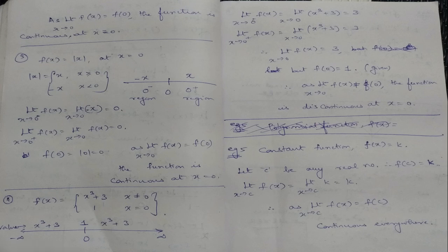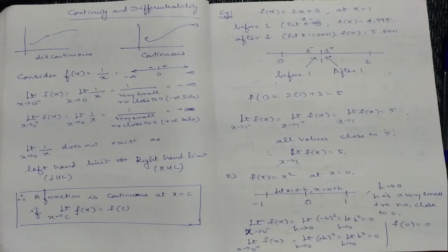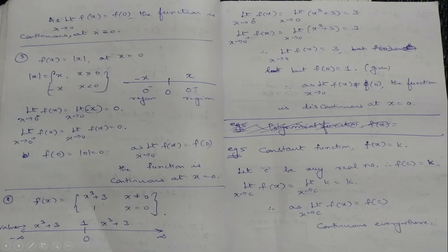If the function is continuous at x = c, the limit equals f(c). We have to find f(c), left-hand limit, and right-hand limit. Sometimes it is not required to find both limits. If both limits equal the value of the function, we conclude the function is continuous. The definition of the modulus function: |x| = x whenever x ≥ 0, and |x| = −x whenever x < 0. New students, please update this in the formula notebook.